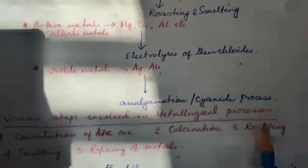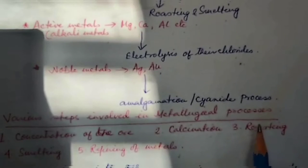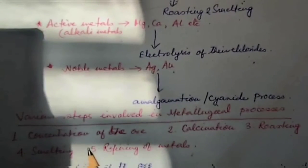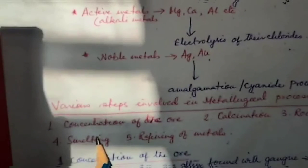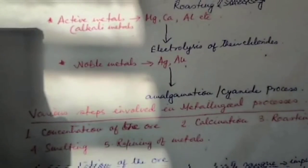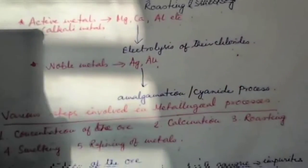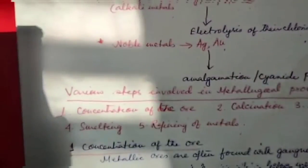The various steps essentially involved in the extraction of pure metals from their respective ores are as follows: number one, concentration of ore; number two, calcination, roasting, smelting, and refining of metals.